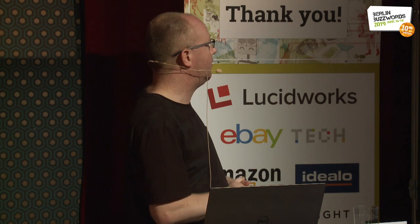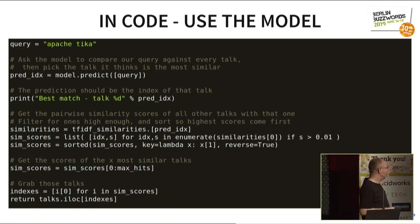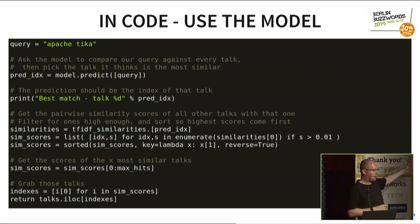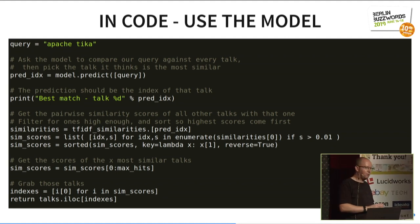Here's our code. To do a query, we feed in some text, ask the model to predict the talk most like it, figure out the similarity score between each talk, sort by similarity to the talk that our model has suggested, and then print those out. Not the best way, but surprisingly effective.